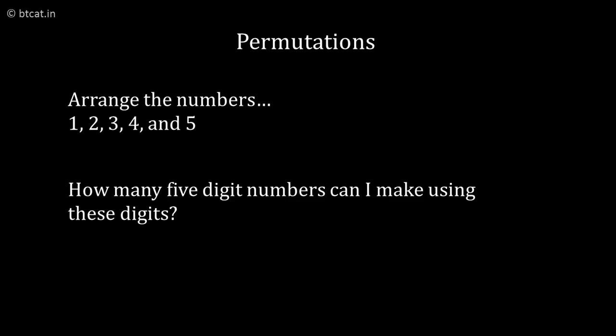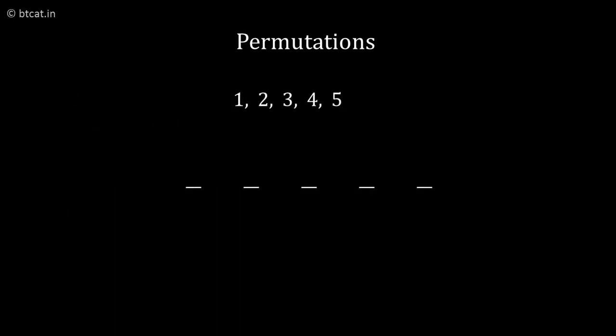The question says how many five digit numbers can I make using these numbers or digits? The most obvious answer which people come up is 5 factorial. First place can come in 5 ways, then 4 ways, then 3 ways, then 2 ways and then 1 way.